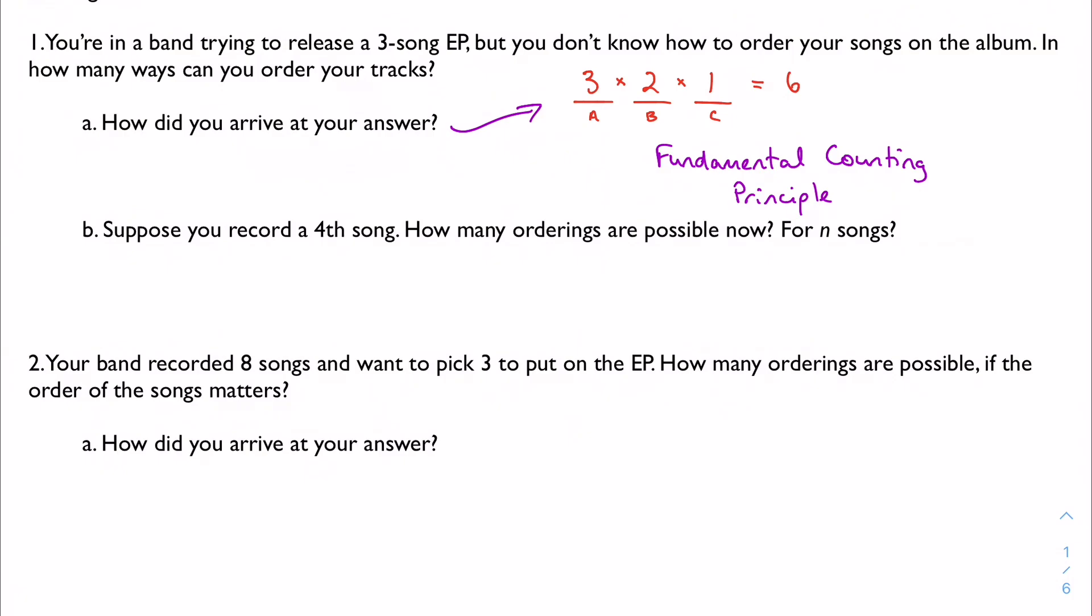I have four options. I can put any of these four songs into my first track. I can put any three of the remaining songs into the second, any two of the remaining songs into the third, and then my last one's going to go last. And again, according to my fundamental counting principle, I can just multiply all these together, and I get 24.